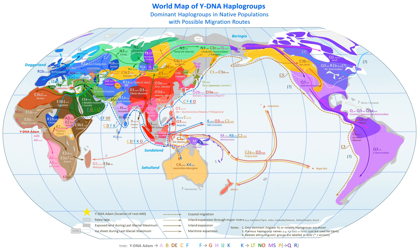In this nested hierarchy, each set is also a subset of a single broader set. Haplogroups are normally identified by an initial letter of the alphabet, and refinements consist of additional number and letter combinations.